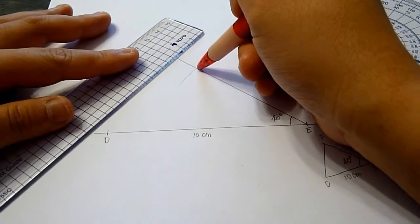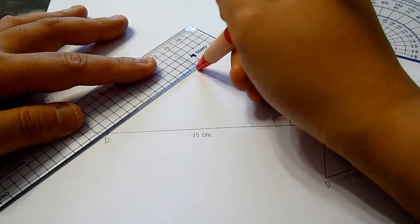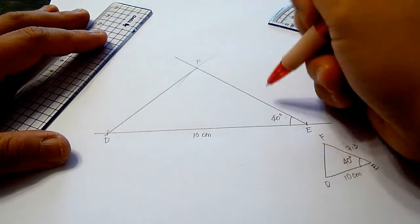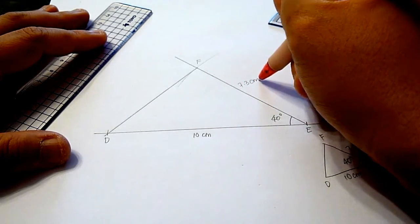And now, we join the two points together. And this is point F. And the measurement here would be 7.3 cm.